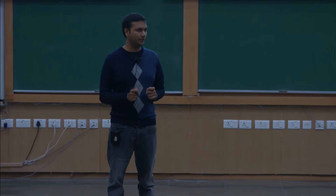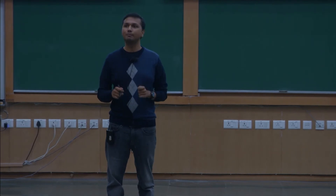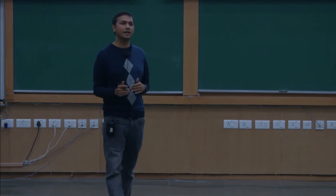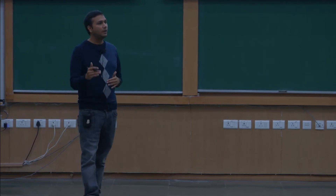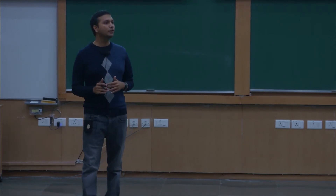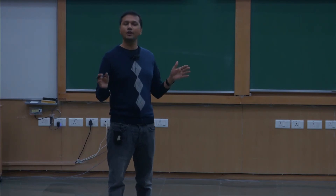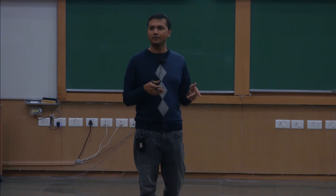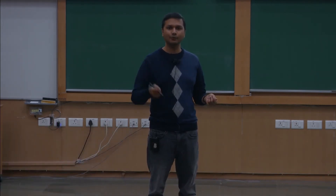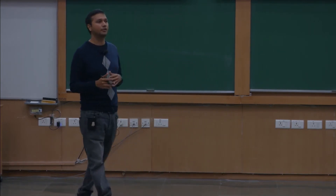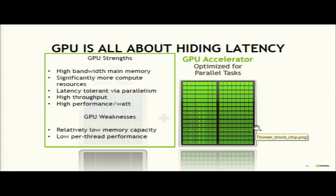GPU is a massively parallel architecture — if you don't have enough parallelism, GPU may not be the right architecture for you. You can't use it for just sorting 100 elements — it's like killing a fly with a cannon. If one thread is waiting for something it will jump to another thread without wasting time, giving high throughput and high performance per watt. GPU cores run at around one gigahertz maximum — three to four times slower than a CPU core — so if you run a sequential job on a GPU it will be at minimum four times slower.